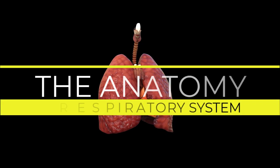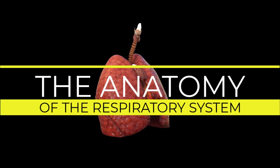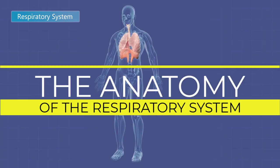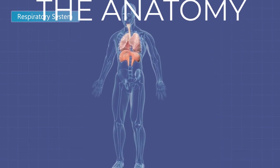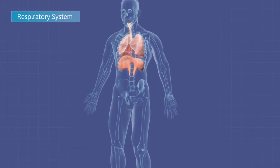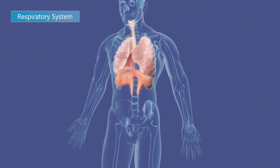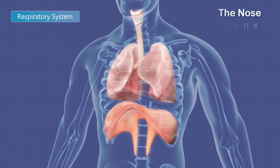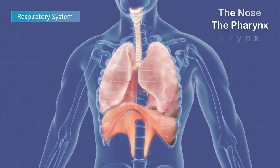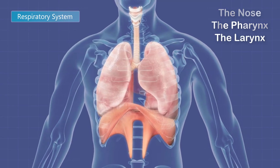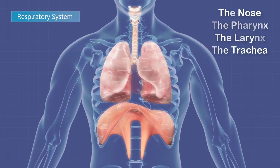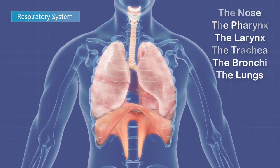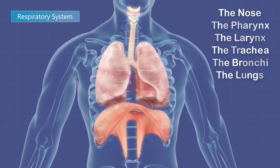The Anatomy of the Respiratory System. The principal organs of the respiratory system are the nose, the pharynx, the larynx, the trachea, the bronchi, and the lungs.